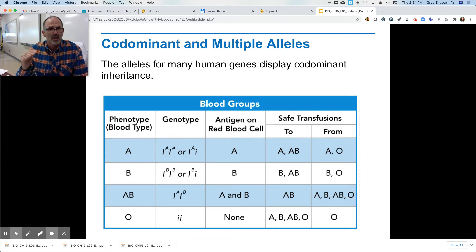A and B are dominant. So if you have A here, you have type A blood. If you have B, you have type B blood. If you have both A and B, you are AB. If you have O, you don't have any of those characteristics.